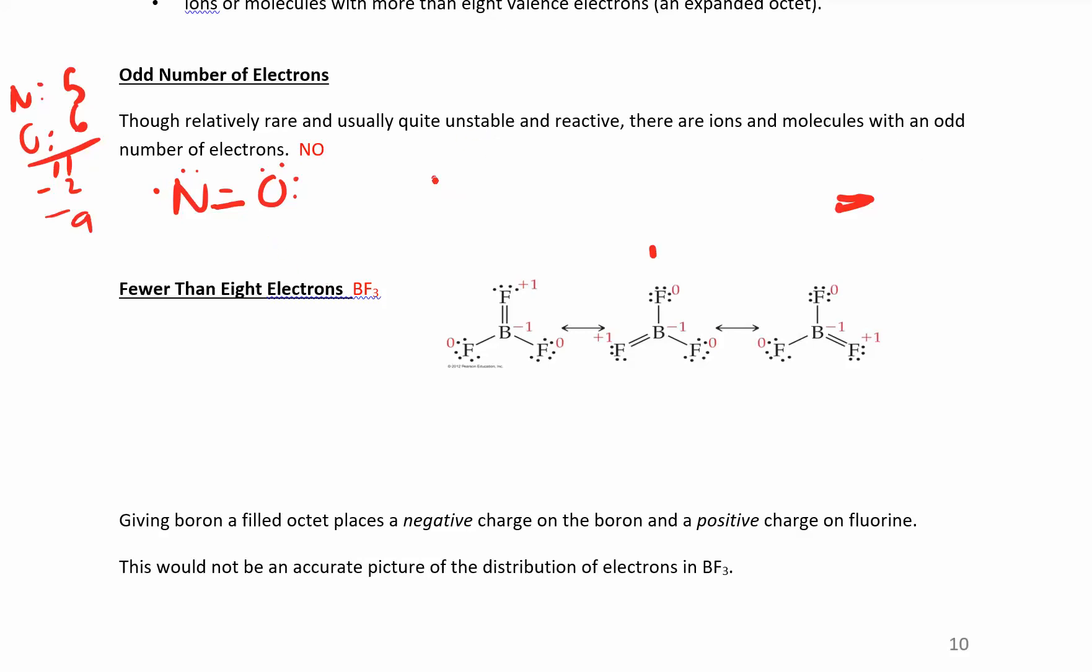The other way to do this is to look at NO and then have three electrons here and over there. When you do the formal charges, you'll find that this structure is actually better. So I'm going to let you guys do the formal charges and see what's true about that.